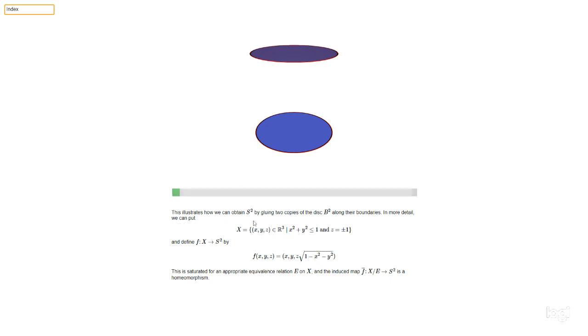So here we've got this space X. X is the points (x, y, z) in R³ with the property that x² + y² is less than or equal to one, and z is equal to plus or minus one. So the condition x² + y² ≤ 1 means we're at a distance less than or equal to one from the z-axis. And the condition z = ±1 means we're either at height one or height minus one. So the space that we've got is like this: here are the points that are at height one, and here are the points that are at height minus one.